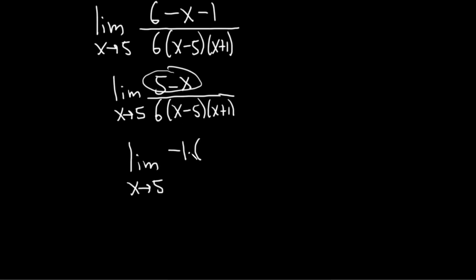Then you say, okay, what do you multiply by negative 1 in order to get negative x? Well, x. And then what do you multiply by negative 1 in order to get positive 5? Well, negative 5. And this is all divided by 6 parentheses x minus 5.